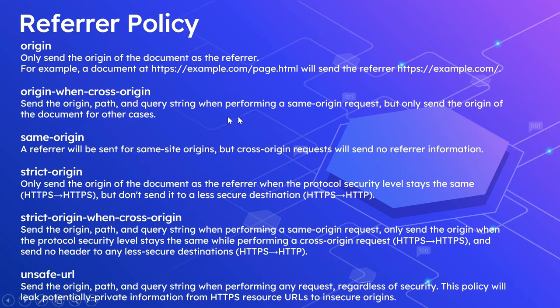The next value is origin-when-cross-origin: this sends the origin, path, and query string when performing a same-origin request — meaning the source page and the sub-resource or link are on the same origin, e.g., myexample.com. But for cross-origin requests, only the origin is sent — meaning just the protocol and domain, e.g., https://example.com. The next value is same-origin: the referrer is sent only for same-origin requests (same protocol and domain), but no referrer information is sent for cross-origin requests.